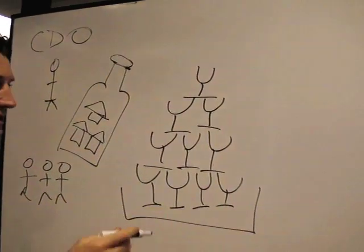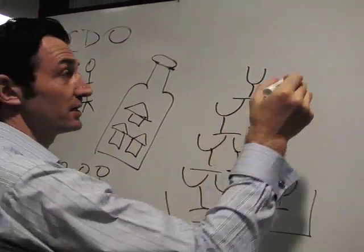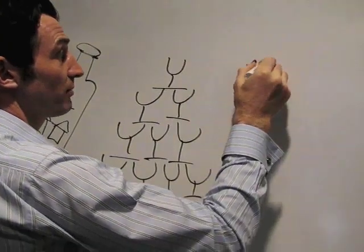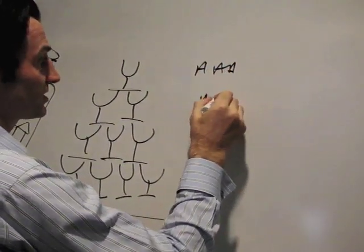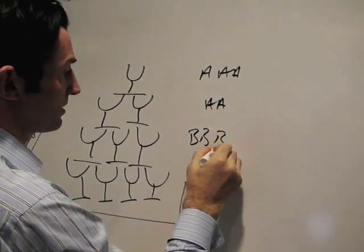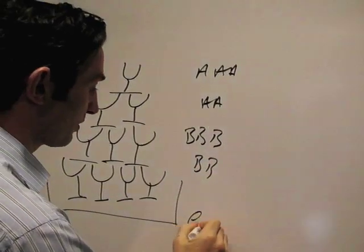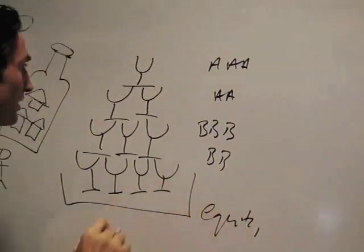And each of these glasses as a security is rated according to their riskiness. So the top rate is triple A, this is double A, triple B, double B, and this bottom tray is the equity. We won't worry about that so much at this point.